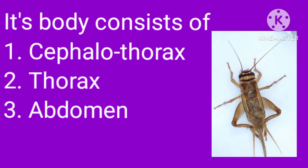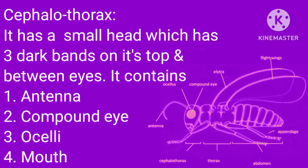Its body consists of a cephalothorax, thorax, and abdomen. The cephalothorax — it has a small head which has three dark bands on its top and between the eyes. It contains the antenna, compound eye, ocelli, and mouth.